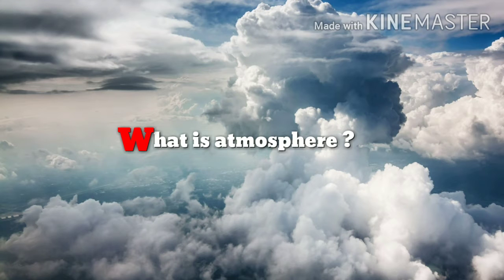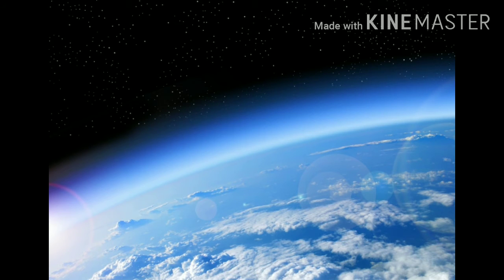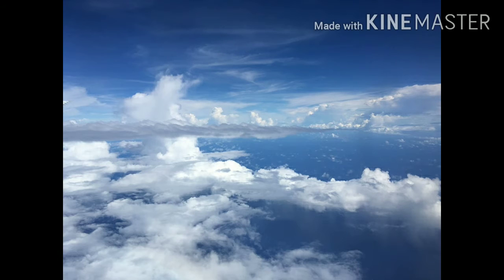Nitrogen comprises 78.1 percent and oxygen 20.9 percent. The atmospheric gases in the remaining one percent are argon at 0.9 percent, carbon dioxide 0.03 percent, varying amounts of water vapor, and trace amounts of hydrogen, ozone, methane, helium, neon, krypton, and xenon.